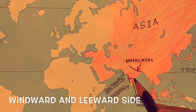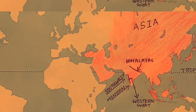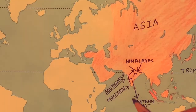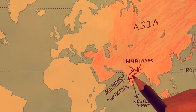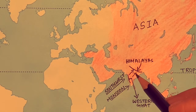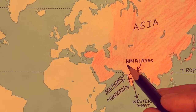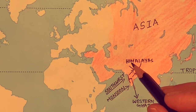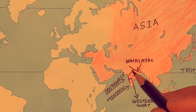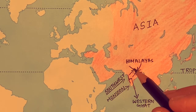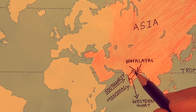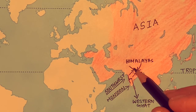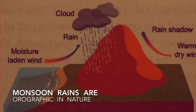Forced to rise, the winds cool and condense, resulting in rainfall. The windward side receives heavy rainfall while the leeward side remains dry. As the rest of the monsoon winds move further north, they encounter the Himalayas and are forced to rise once again.